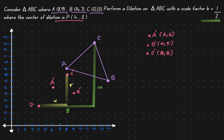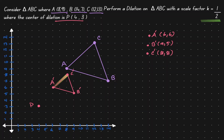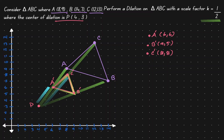Let's clean this up and connect our points. This triangle A prime, B prime, C prime is the result of dilating the original triangle by a scale factor of one-half where the center of dilation is at (4,3). In other words, we found the distance from P to A and then halved that distance. We did the same for C and for B — found the total distance and then halved it.